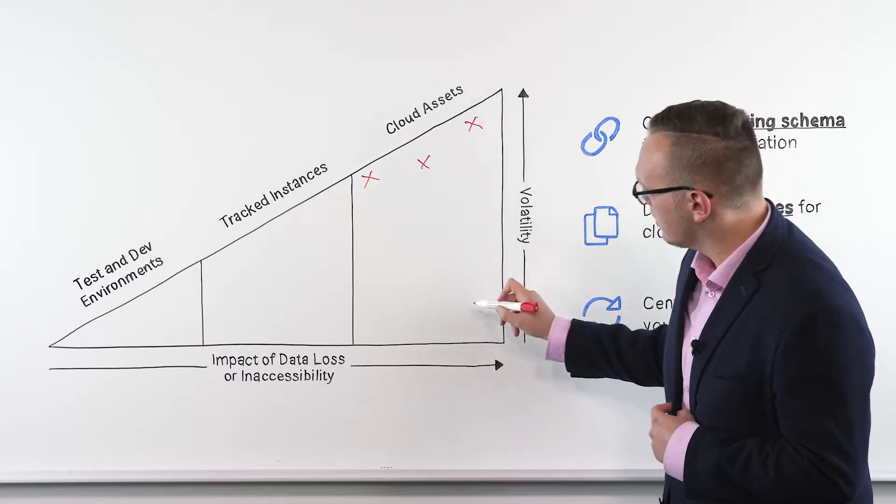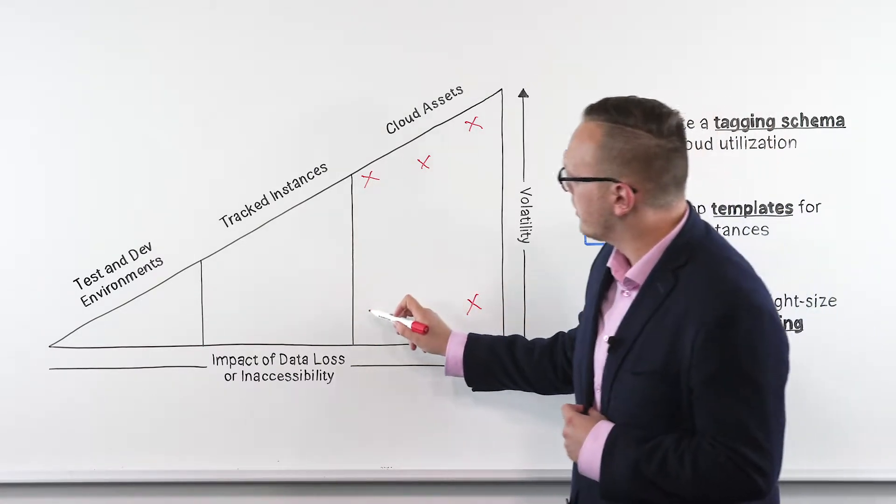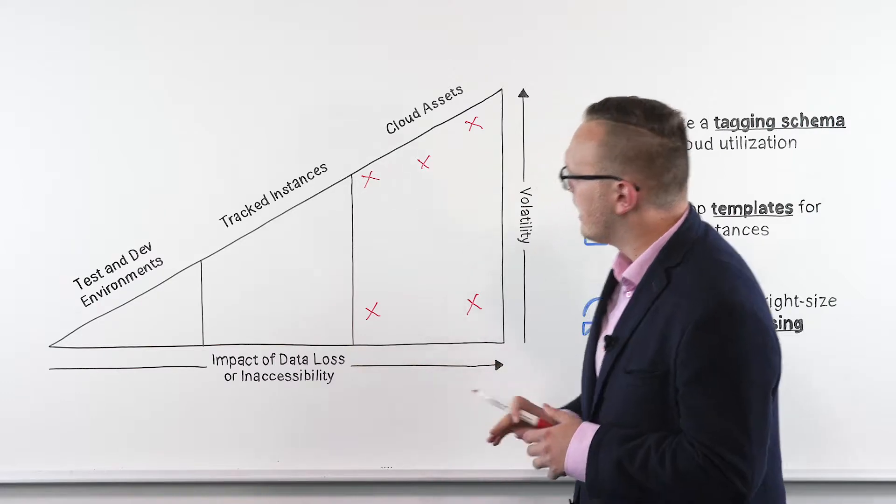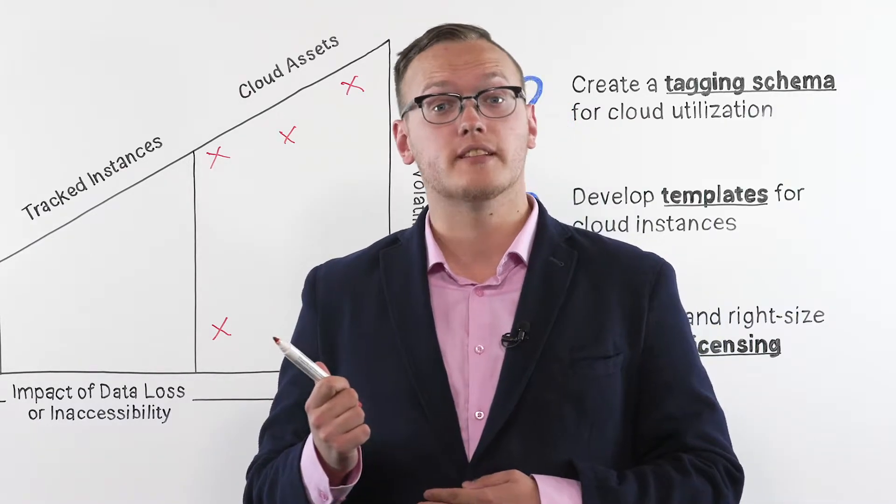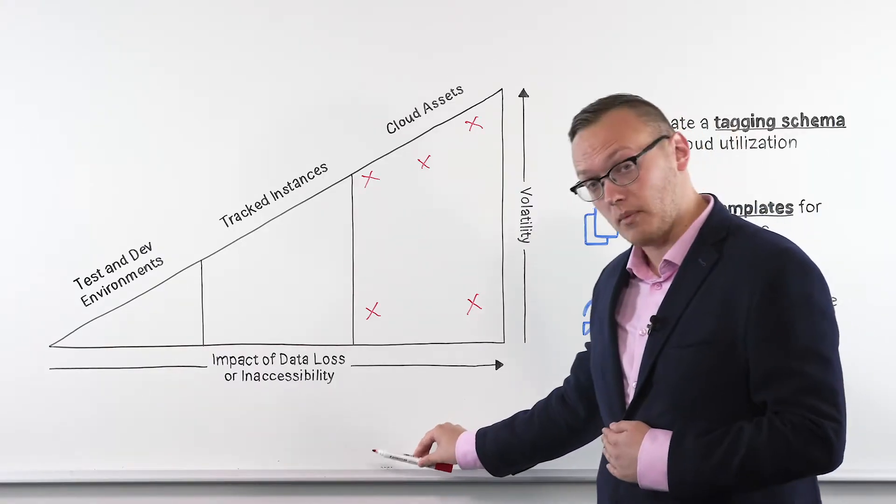Down here are the cloud instances that are not quite as volatile in their storage or compute needs. These are going to be tools such as Office 365, Slack, or Dropbox.